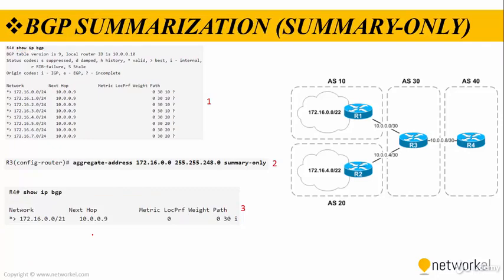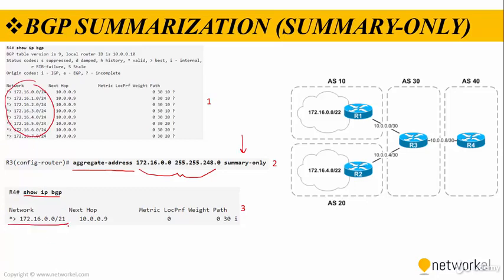If we use the summary-only command in BGP route summarization, only the summarized route is advertised. We use the aggregate address command with the IP address, subnet mask, and the summary-only keyword. When we check the show IP BGP output from router 4, we are not going to see the individual routes — the only thing we see is just the summary route.